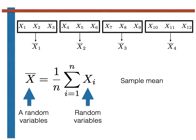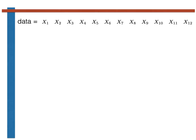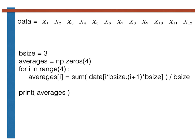Let's consider how we would write a Python script to perform this calculation. Suppose first that the data is stored in an NP array called data. The code we would use to calculate the four block averages is shown here. In this code, bsize is the length of the blocks we're using to calculate each average.